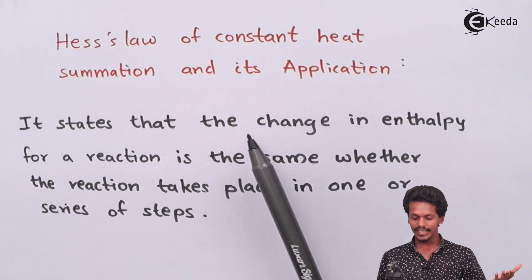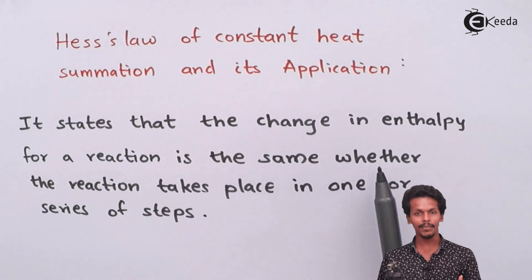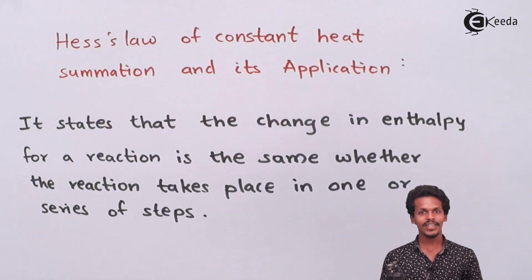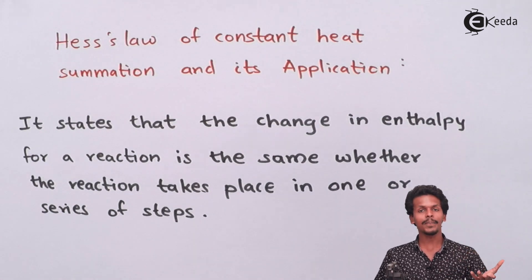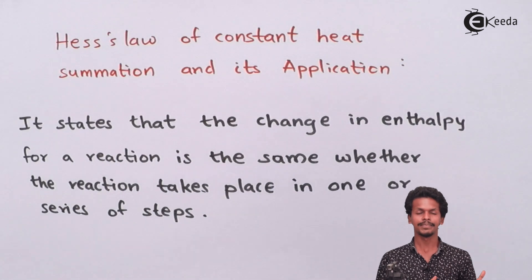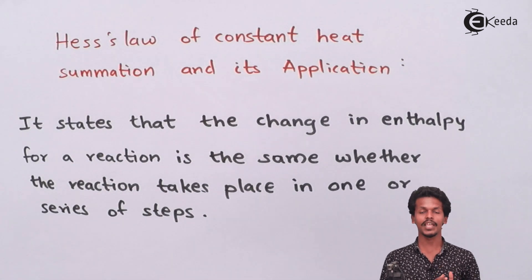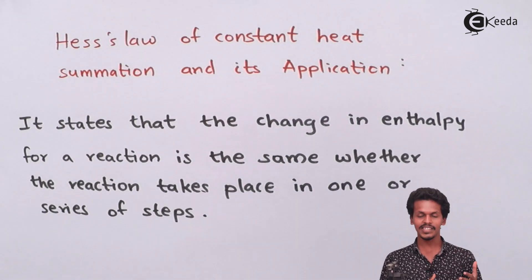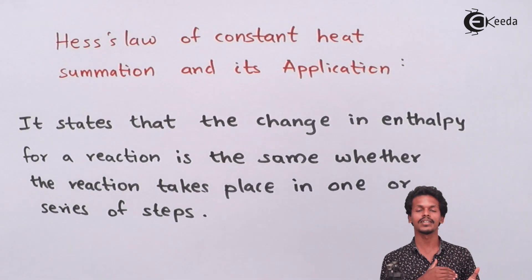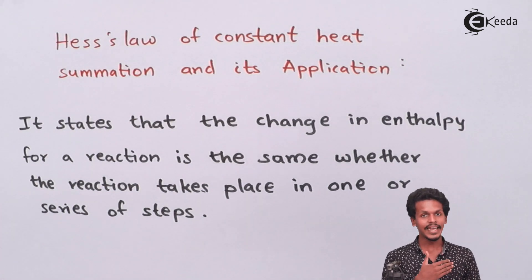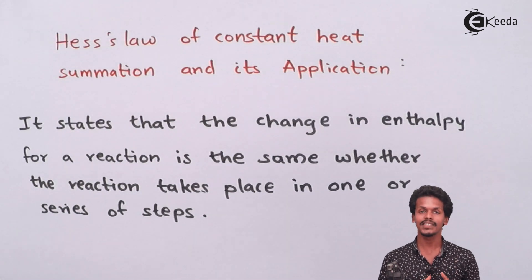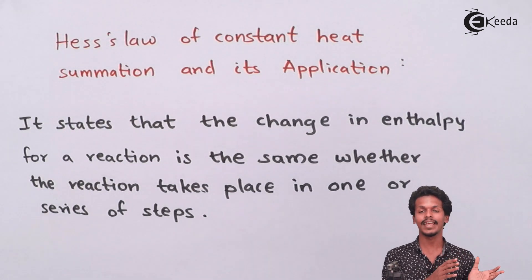The statement of Hess Law says that the change in enthalpy for a reaction is the same whether the reaction takes place in one step or a series of steps. So if a reaction goes from A to C directly, or if it takes place via intermediate steps A to B and then B to C, the total enthalpy change equals that for the direct A to C conversion.